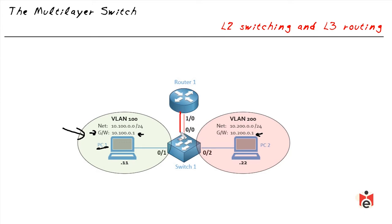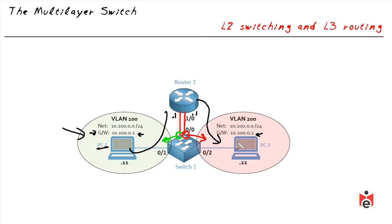We could have two interfaces going from the switch up to a router — one in VLAN 100 and one in VLAN 200 as access ports. The router would have .1 on the 10.100 network and 10.200.0.1 on the other, acting as default gateway for both. A packet from PC1 would be forwarded to the router, which forwards it to the destination network, and reply traffic from PC2 goes back the same way.